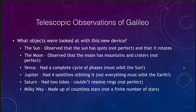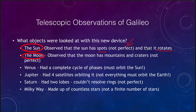He looked at things like the sun and the moon. What he learned was that the sun had spots — sunspots — and that it was rotating. Having sunspots meant that the sun was not perfect, and that was in contradiction to what the Greeks had told us: that the heavens were perfect and that everything moved in circles. The moon having mountains and craters was again evidence that these objects were not perfect.